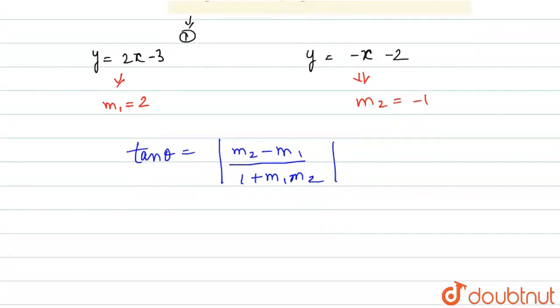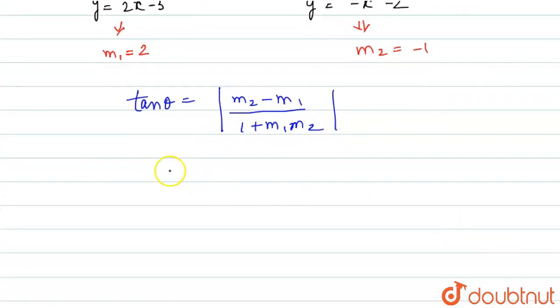Now, we will put the values. So tan theta will become, m2 is minus 1, and m1 is 2. m2 minus m1.